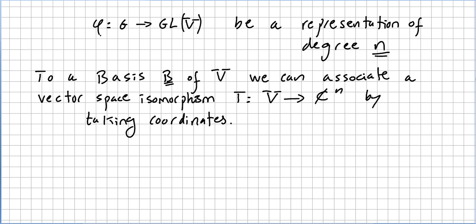So let φ be a representation of degree n. It doesn't have to be 1 now. So this is a homomorphism from a group G to the general linear group, and the representation has degree n.